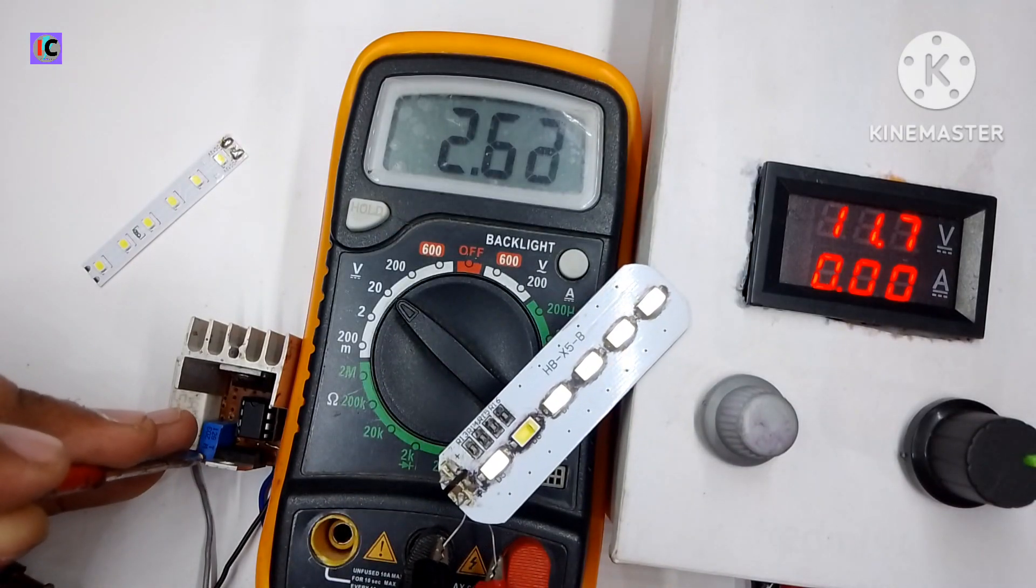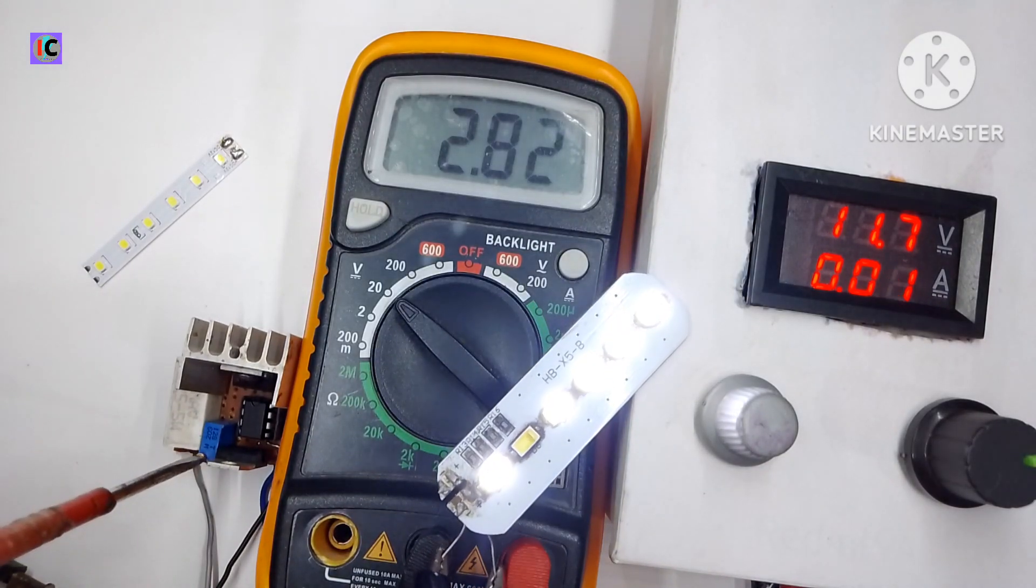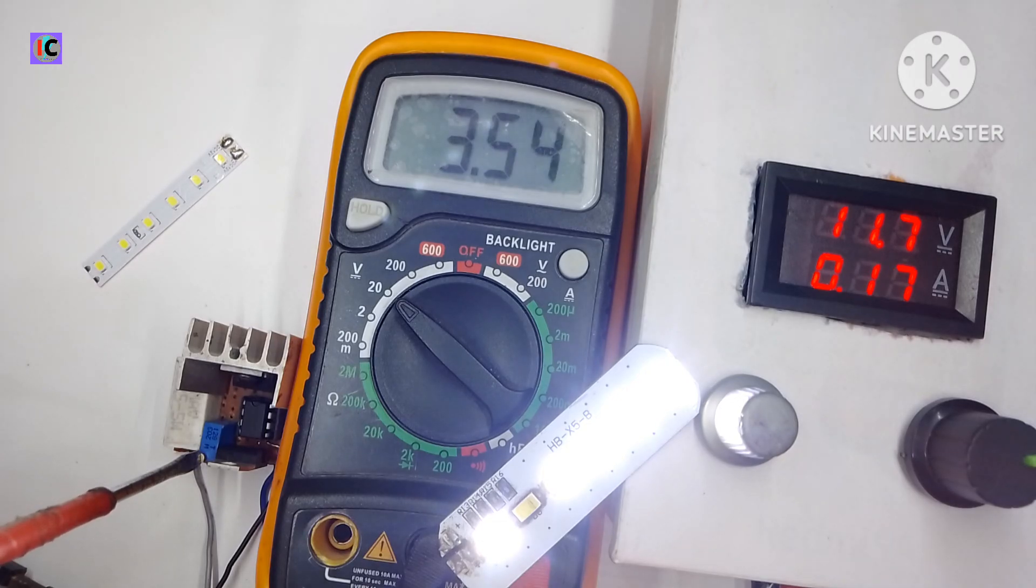I have to increase the current limit and you can see the voltage is rising and this LED glows at 4 volts.